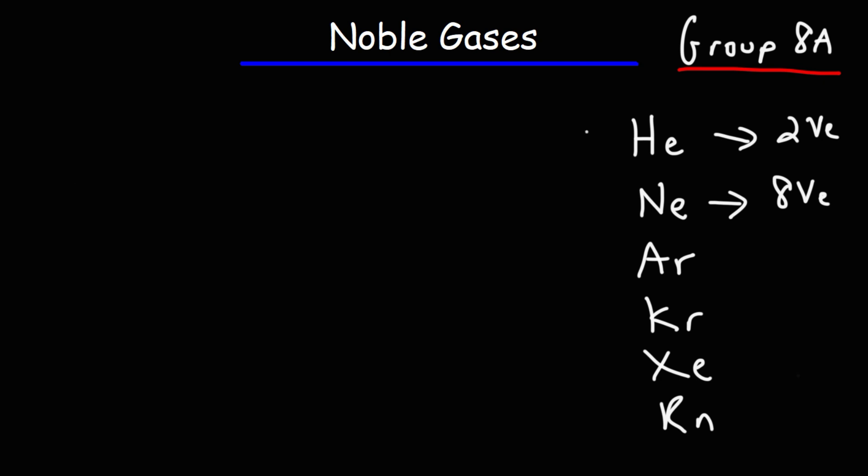Now as you go down the group, the boiling point of the noble gases increases. The atomic radius increases as well.